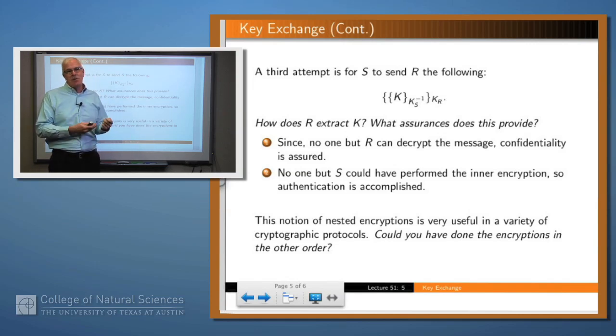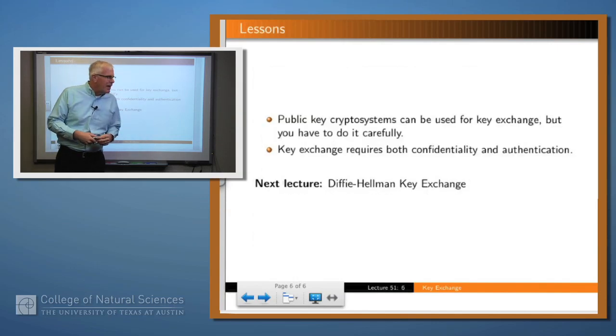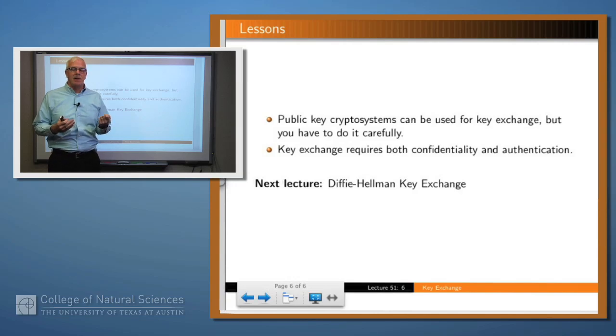A question you might ask yourself is, could you have done the encryption in the other order? And I'll let you think about that. So what have we learned? We can use public key infrastructure to accomplish key interchange, but we have to be pretty careful about how we do it because we want both confidentiality and authentication. And just one level of encryption probably won't give us both of those. And so we need two levels of encryption. This is an example, by the way, of what's called a cryptographic protocol, which we'll look at in quite some detail later on. Thanks.